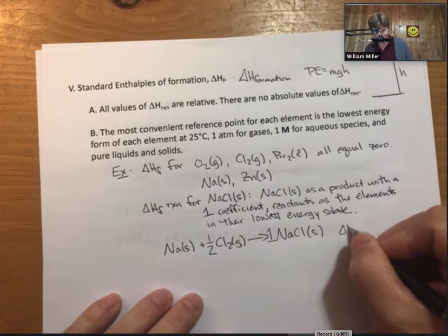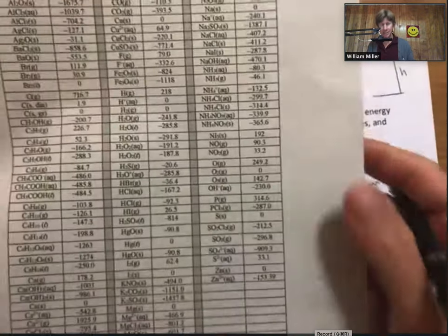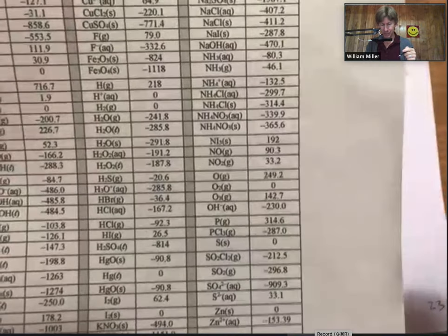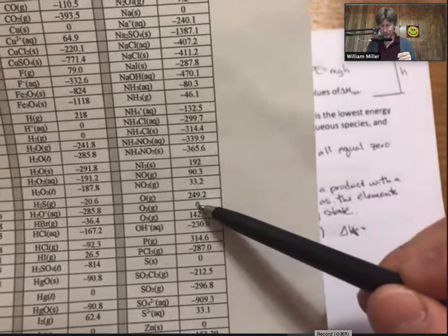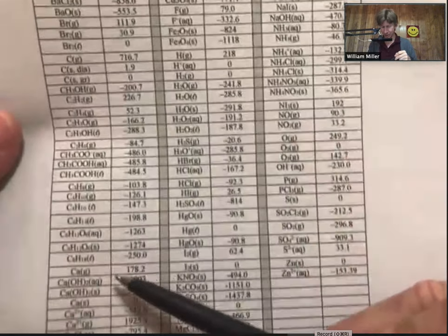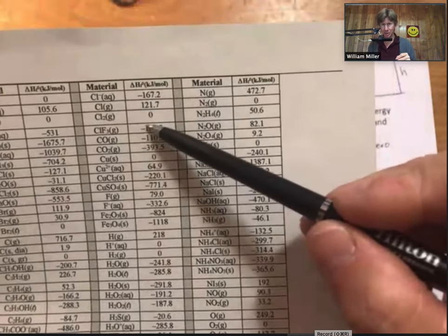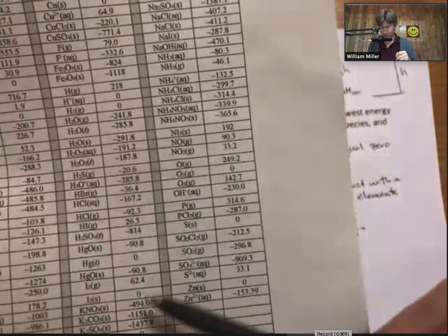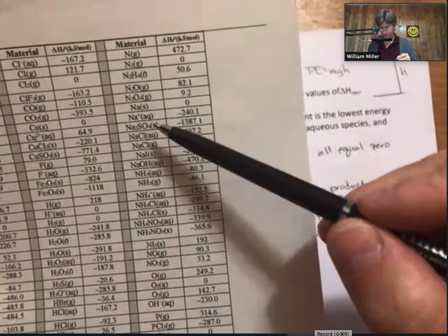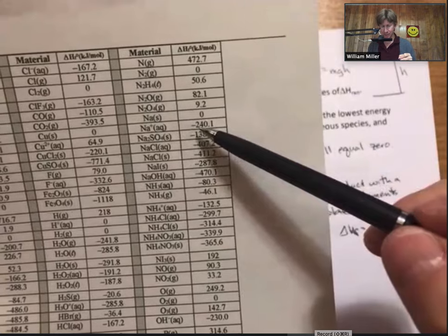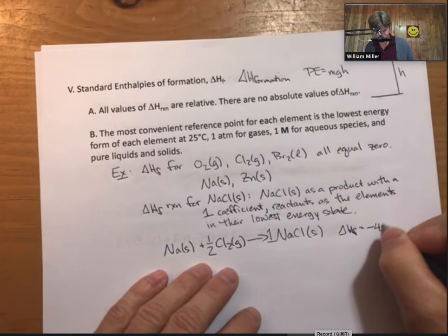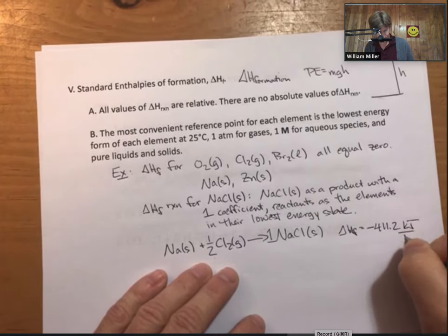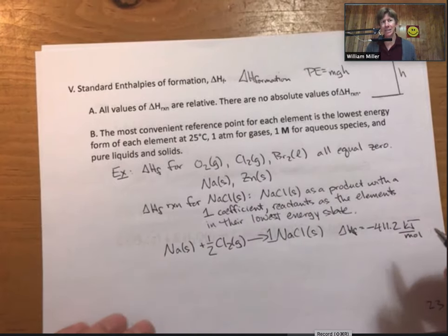The delta HF value, those are what are tabulated over here. We can see, H2 is zero. O2 is zero. Let's see if we can find Cl2 on here. Cl2 is zero. Sodium solid is zero as well. And sodium chloride solid minus 411.2.